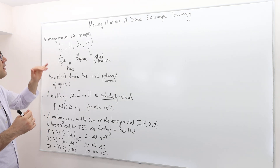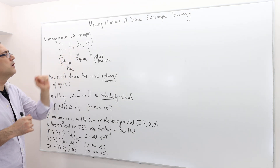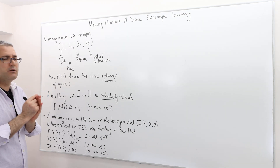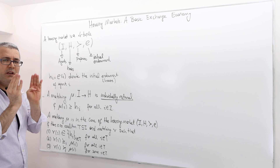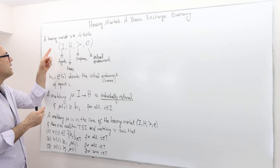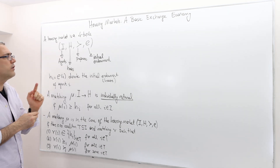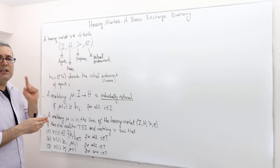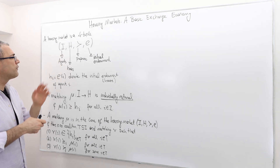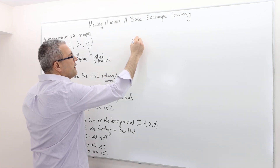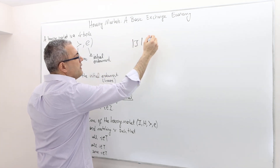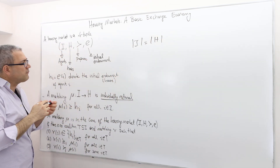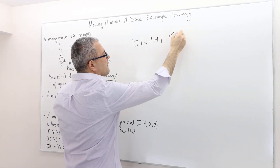A housing market is a quadruple — there are four main ingredients. Whenever I say housing market, you should think of those four main ingredients. The first one is I, the set of agents, or set of individuals — finite. The second is H, the set of houses — again, finite. For simplicity, we're going to assume that the number of individuals and the number of houses are the same.